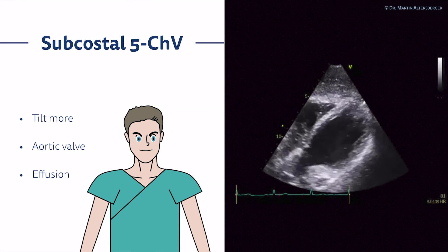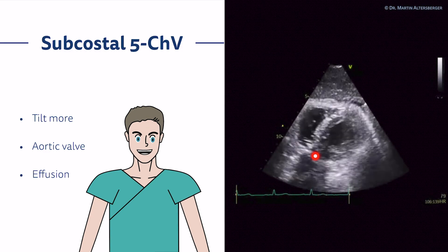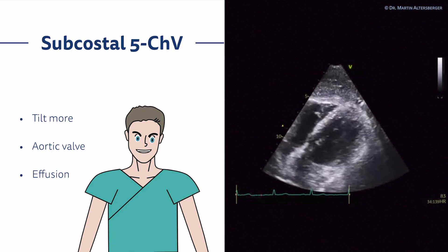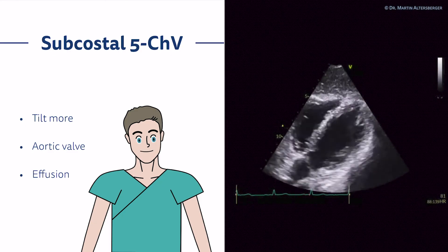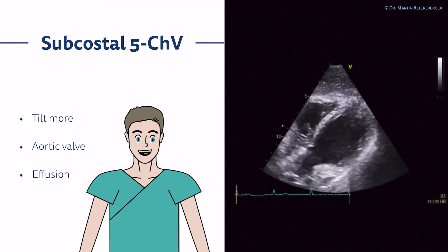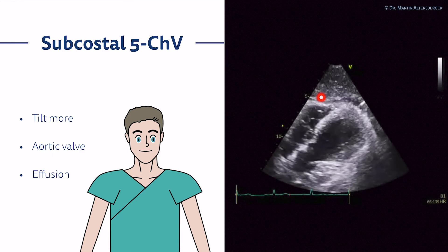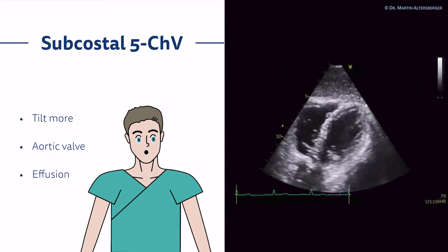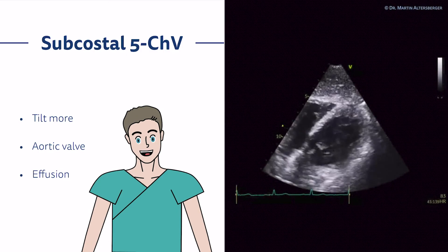Moving on subcostally, we discussed before that we can also see the fifth chamber. The aortic valve and LVOT are seen here. You simply have to tilt the beam of the transducer more cranially and you get a very nice view of how the valve is opening. You lose a little bit of sight of the left atrium. You can also check for pericardial effusion; any free fluid seen here is not pathological in this case. So in this view you can evaluate the heart for relevant pericardial effusion.